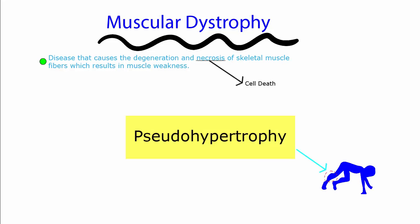After the death of the cell, eventually pseudohypertrophy sets in, which is the replacement of muscle with fat and connective tissue. Pseudohypertrophy is very common in the calves of someone with muscular dystrophy.